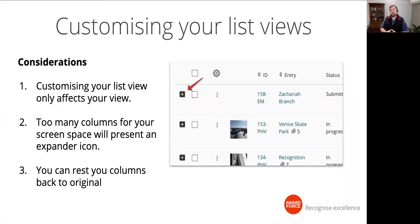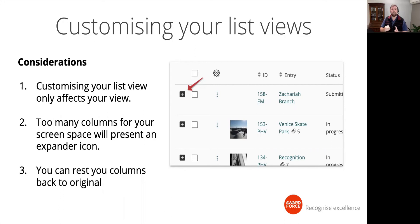A few considerations with customizing your list views: any customizations you make only affect your view — all other program managers can customize their own view without affecting yours. If you add more columns than your screen space allows, you'll see an expander icon. Consider making your browser full screen or hiding and showing only relevant columns using the cog. You can also reset your columns back to their original setting.